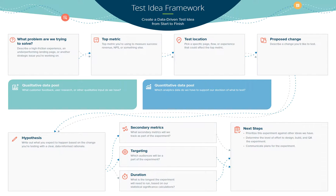Figure out your test locations — what pages have the likely highest impact to change and what changes you want to make on those pages. Formulate a hypothesis, then begin setting up your experiments: how you would want to run these, how long, who your audience is, and then prioritize. Start with the ones that have the highest priority and work your way on down.